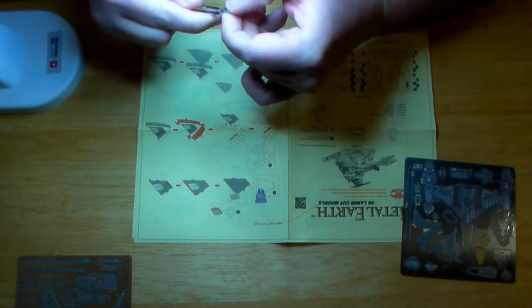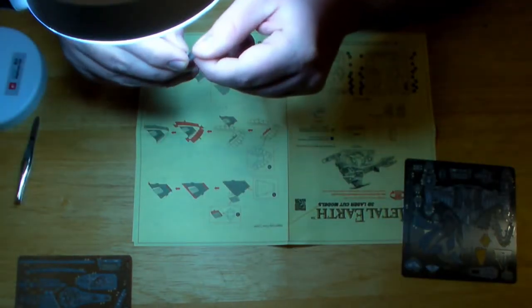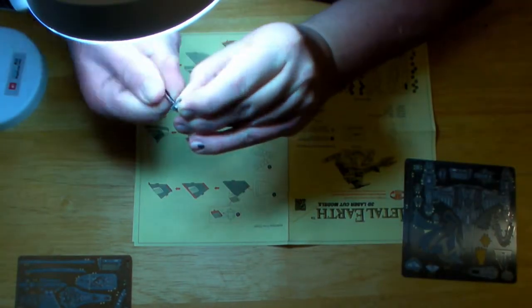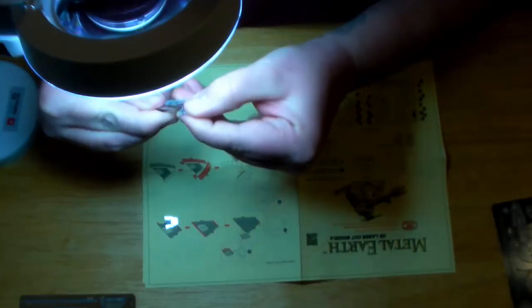The kit starts off simply enough. You're just building up little small parts, bending them over and connecting them to slowly build up the detail of the ship.